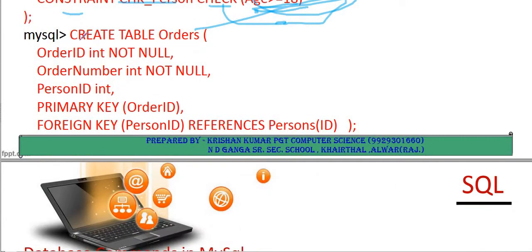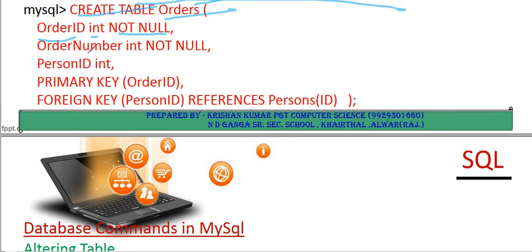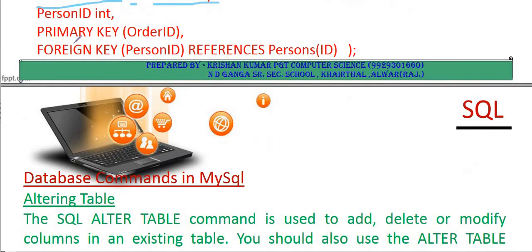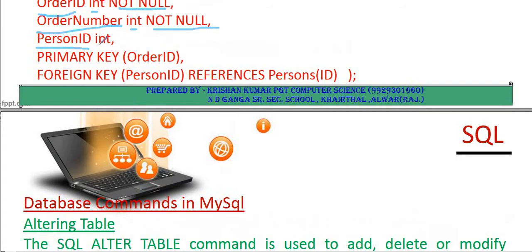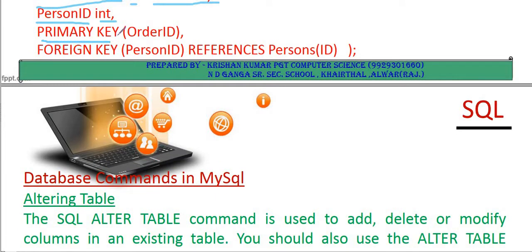The second table is 'orders'. CREATE TABLE orders: 'order_id' is a column name with INT data type and NOT NULL constraint. 'order_number' is a column name with INT data type and NOT NULL constraint. 'person_id' is a column name with INT data type. PRIMARY KEY is applied on order_id, FOREIGN KEY is applied on person_id, and it references person_id from the person table.